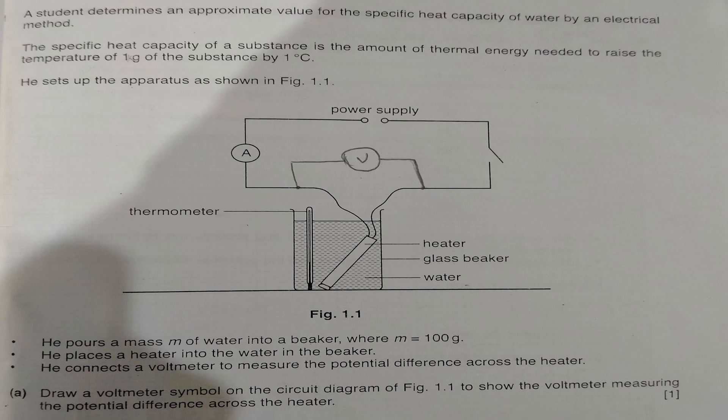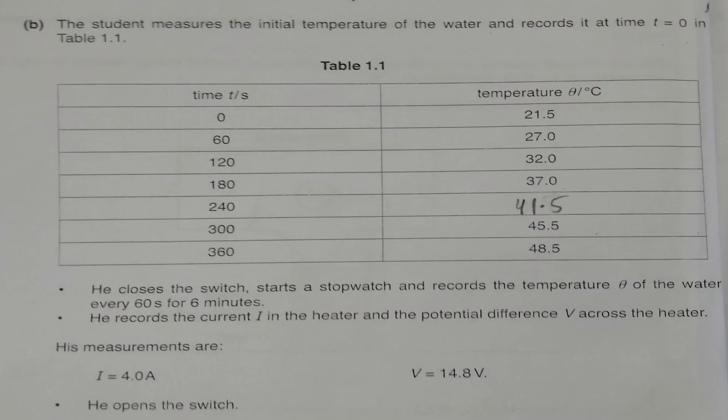Simply, as shown in the slide, the voltmeter connects in parallel across the heater. In part B, the student recorded the initial temperature, starting from zero time and taking readings up to 360 seconds, recording the corresponding temperature (theta value).